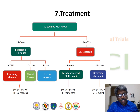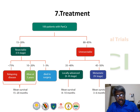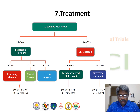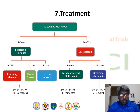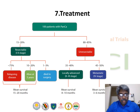Coming to treatment: if we consider 100 patients with pancreatic cancer, 80 to 85% will be unresectable — 35 to 40% locally advanced and 45 to 50% metastatic (stage 4 disease). Of the 15 to 20% with resectable stage 1–2 disease, even with curative intent, 75% of patients will have relapsing disease and only 10 to 20% will be alive at 5 years. Additionally, 1 to 2% of patients can die from surgery itself.